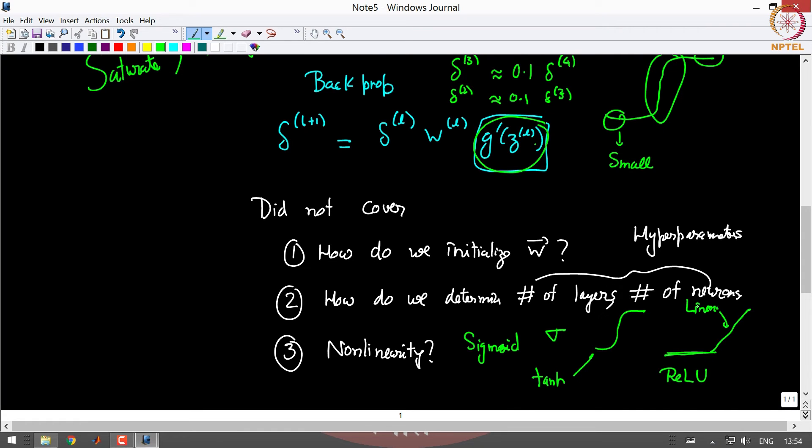Different choices can be made for different problems. As a very simple rule of thumb, for problems with numbers we tend to use artificial neural networks and we tend to use tan h instead of sigmoid. For convolutional neural networks we tend to use ReLU which you will see in the next week.